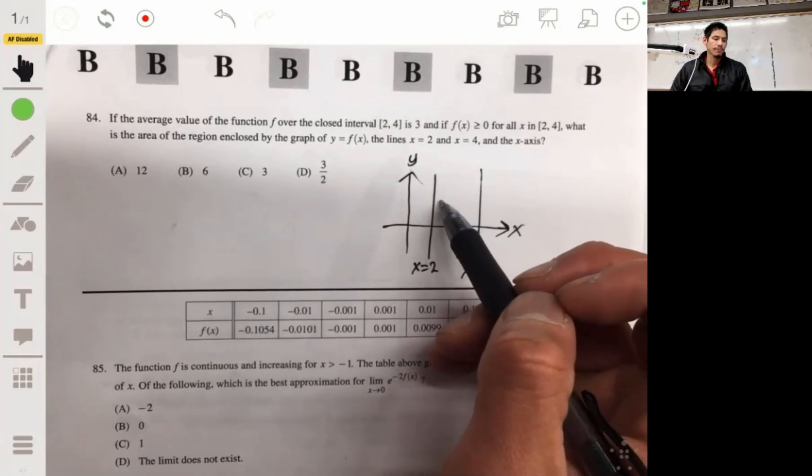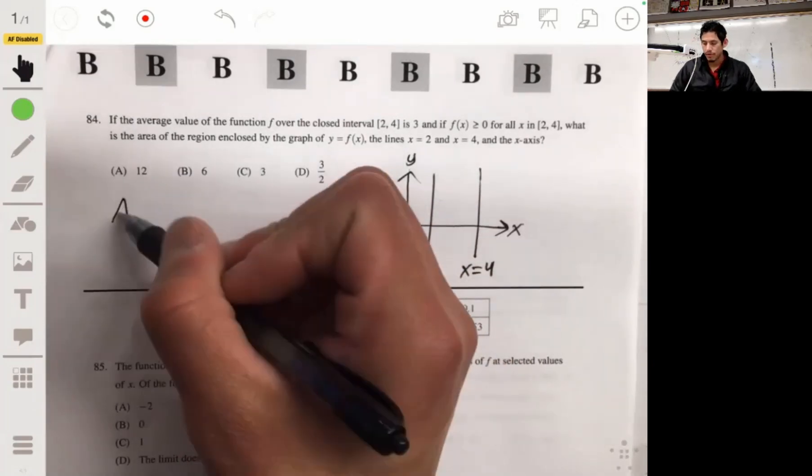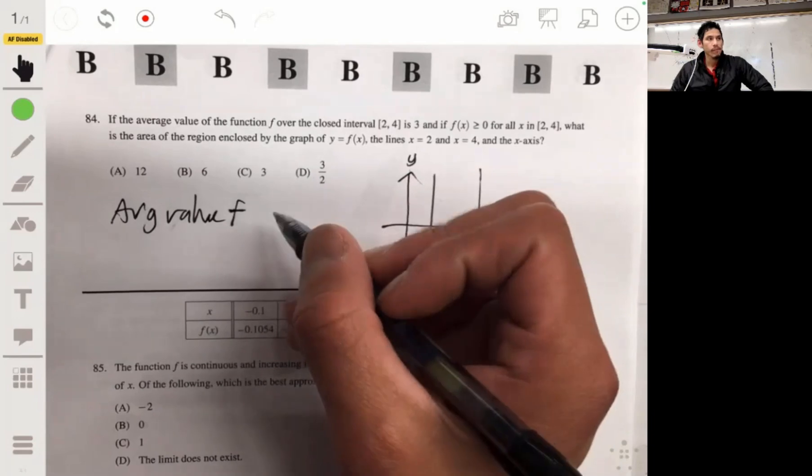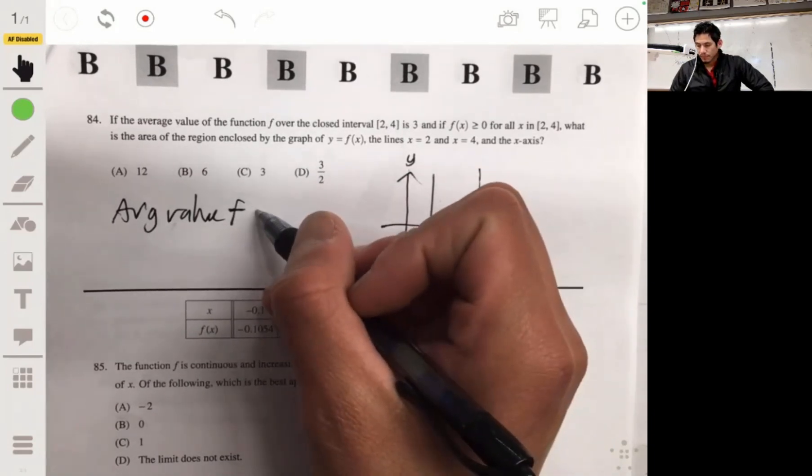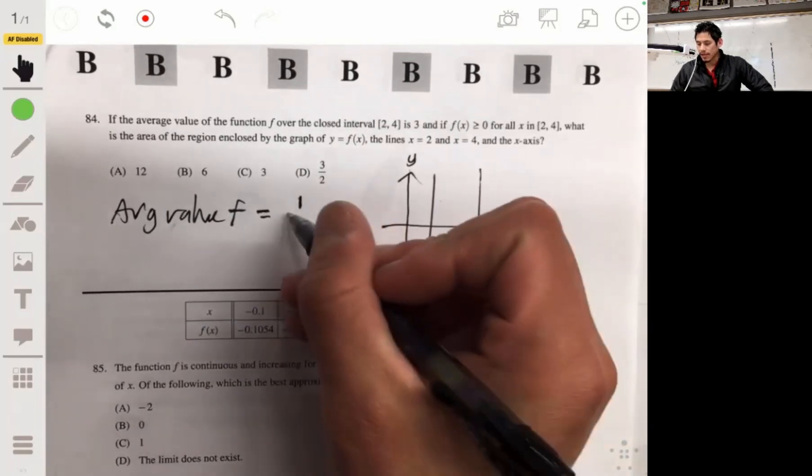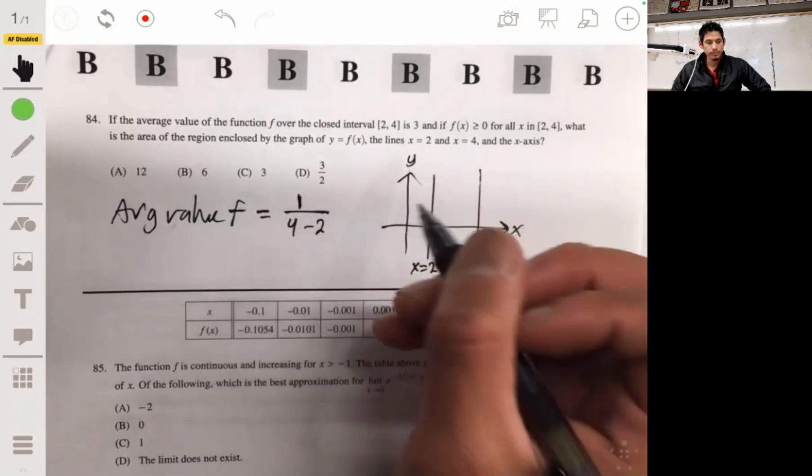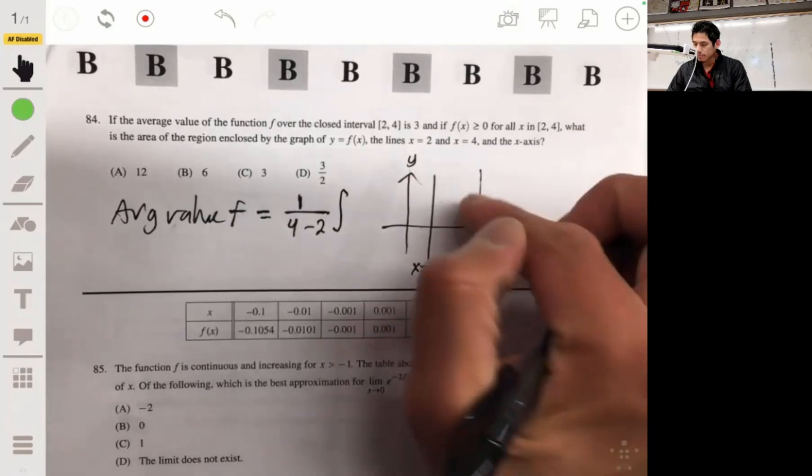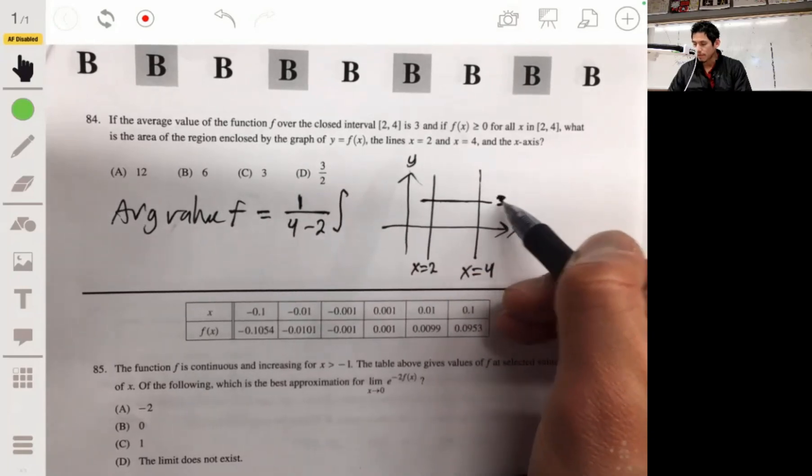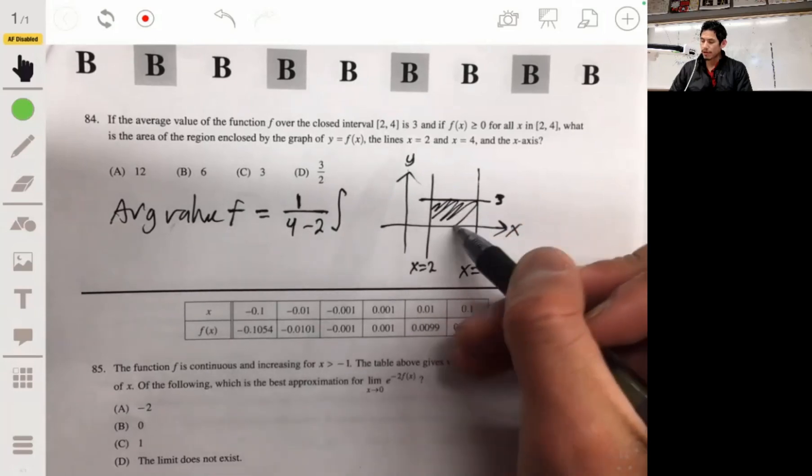This is a good example of how we can apply the average value concept, where the average value of f over some interval a to b will be equal to basically the width, 1 over b minus a, or 1 over 4 minus 2, times basically the area above the x-axis.